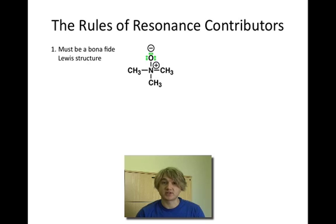The first thing that we discussed earlier is that you must draw a bona fide Lewis structure every time you draw resonance. For example, when we have this negative charge on oxygen and the positive charge on nitrogen, you cannot draw that arrow down and form that double bond and get rid of those charges because there are 10 electrons around that nitrogen and it's not a valid Lewis structure. So do not fall into that trap.